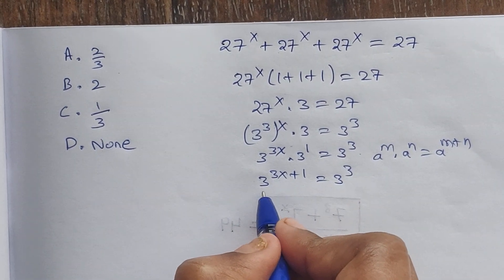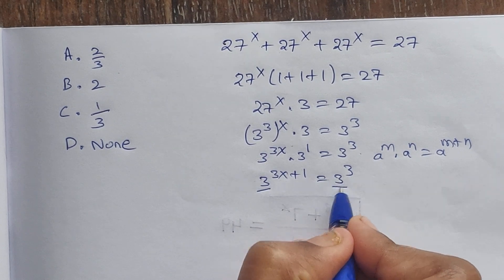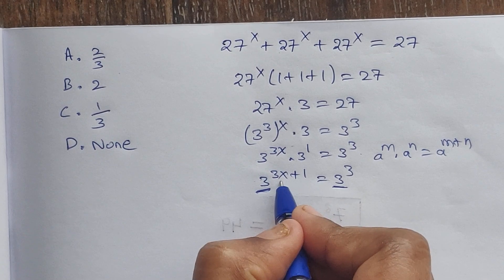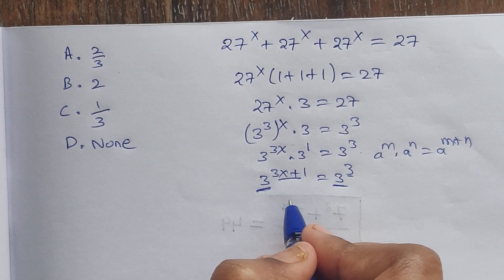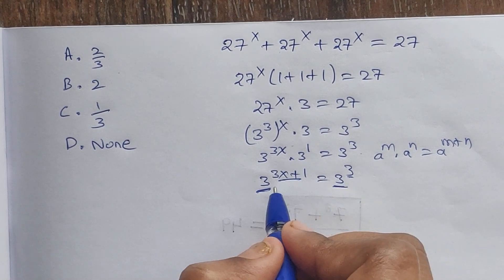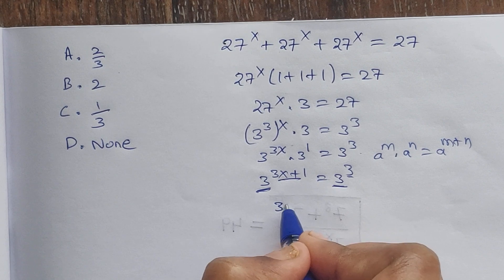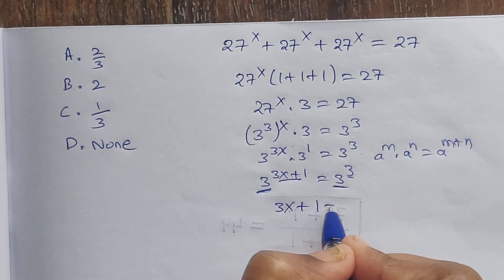Here we have the same base on both sides. Since the bases are equal, the exponents must be equal. So 3x + 1 = 3.